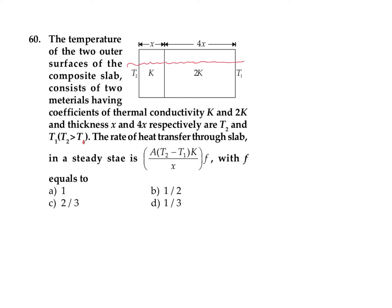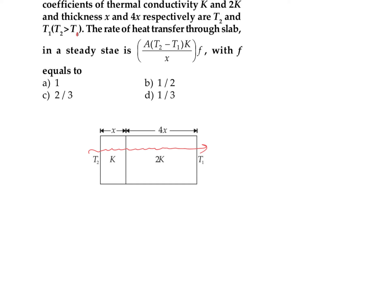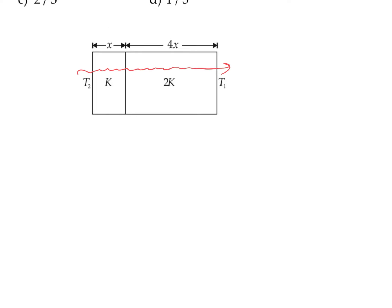For solving this type of question, we can consider it like two resistors of resistance R1 and R2 connected in series. The equivalent resistance of this combination will be equal to R1 plus R2 because they are connected in series.